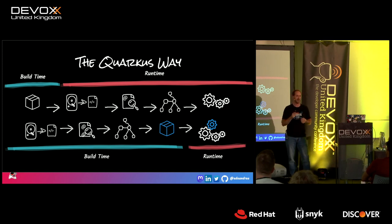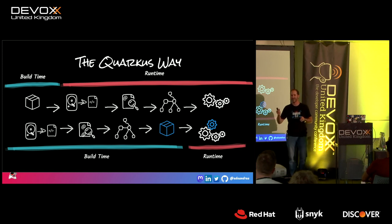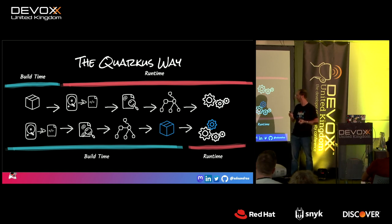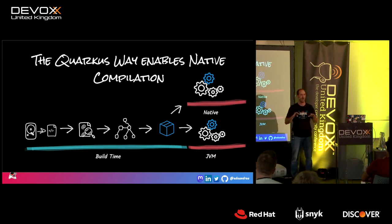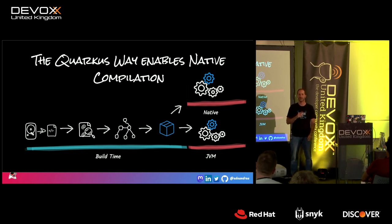Native image is kind of like a shiny object everybody's chasing — like Kafka five years ago. Probably 80% of use cases belong on the JVM rather than native. Native image is kind of a side effect of Quarkus's design in the first place — you've been able to build a native image in Quarkus since 2019, whereas Spring has just started to come around to it now.